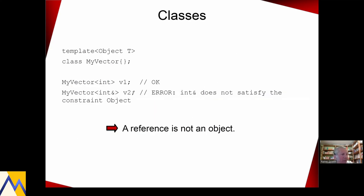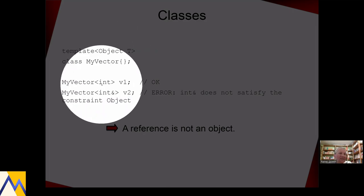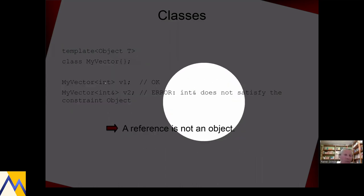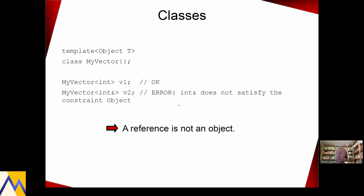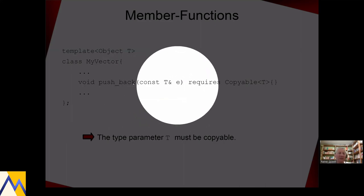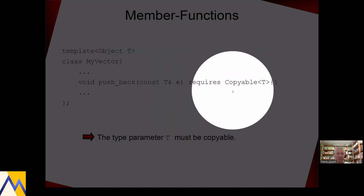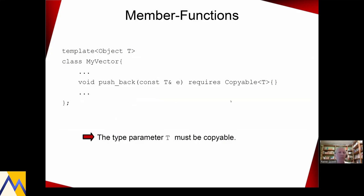Now I show you different use cases of concepts. For example, I define here a vector taking an Object concept. If I want to instantiate this vector with a reference, such as int&, it does not satisfy the constraint 'object', because it's not an object, it's a reference. I can also use it applied on a member function — for example, push_back — which requires that T, the elements of the vector, are CopyConstructible. If not, I would get a readable error message.